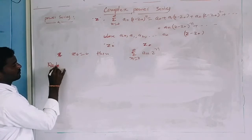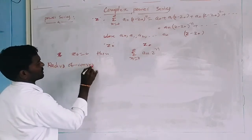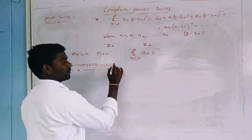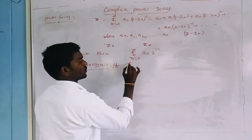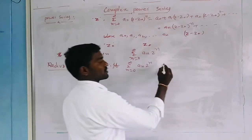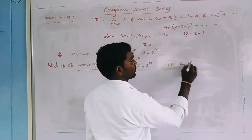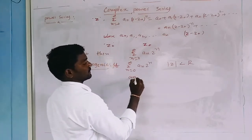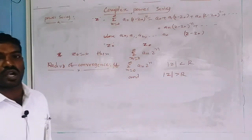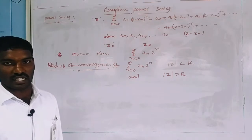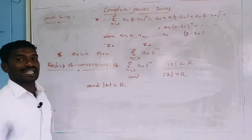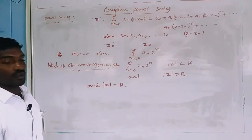Next, the definition of radius of convergence. If summation n equals 0 to infinity of aₙ into Z power n is convergent for modulus of Z less than capital R, then capital R is called the radius of convergence of the power series.